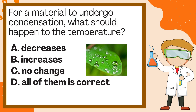For a material to undergo condensation, what should happen to the temperature? A. Decreases. B. Increases. C. No change. D. All of them are correct. The correct answer is A. Decreases.